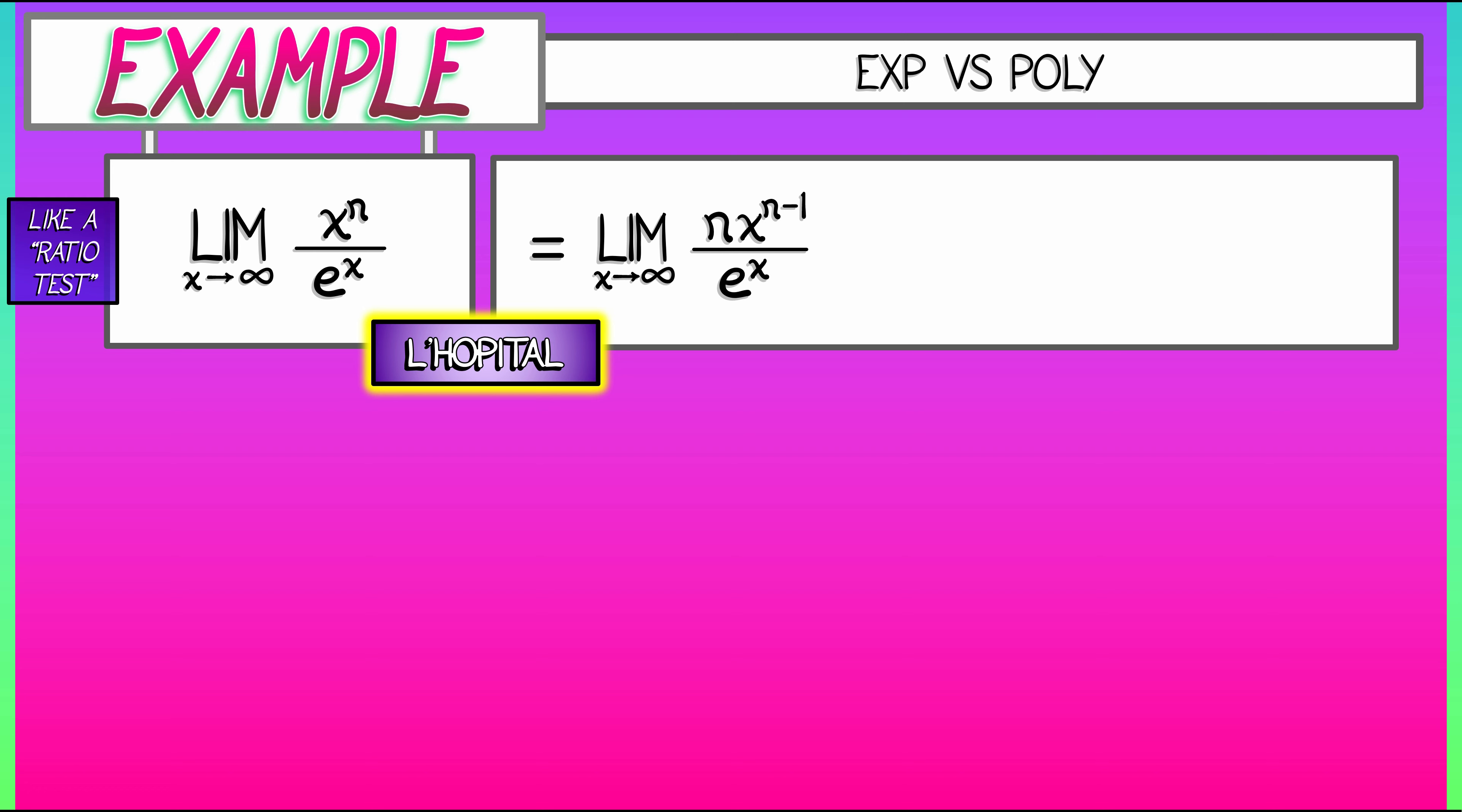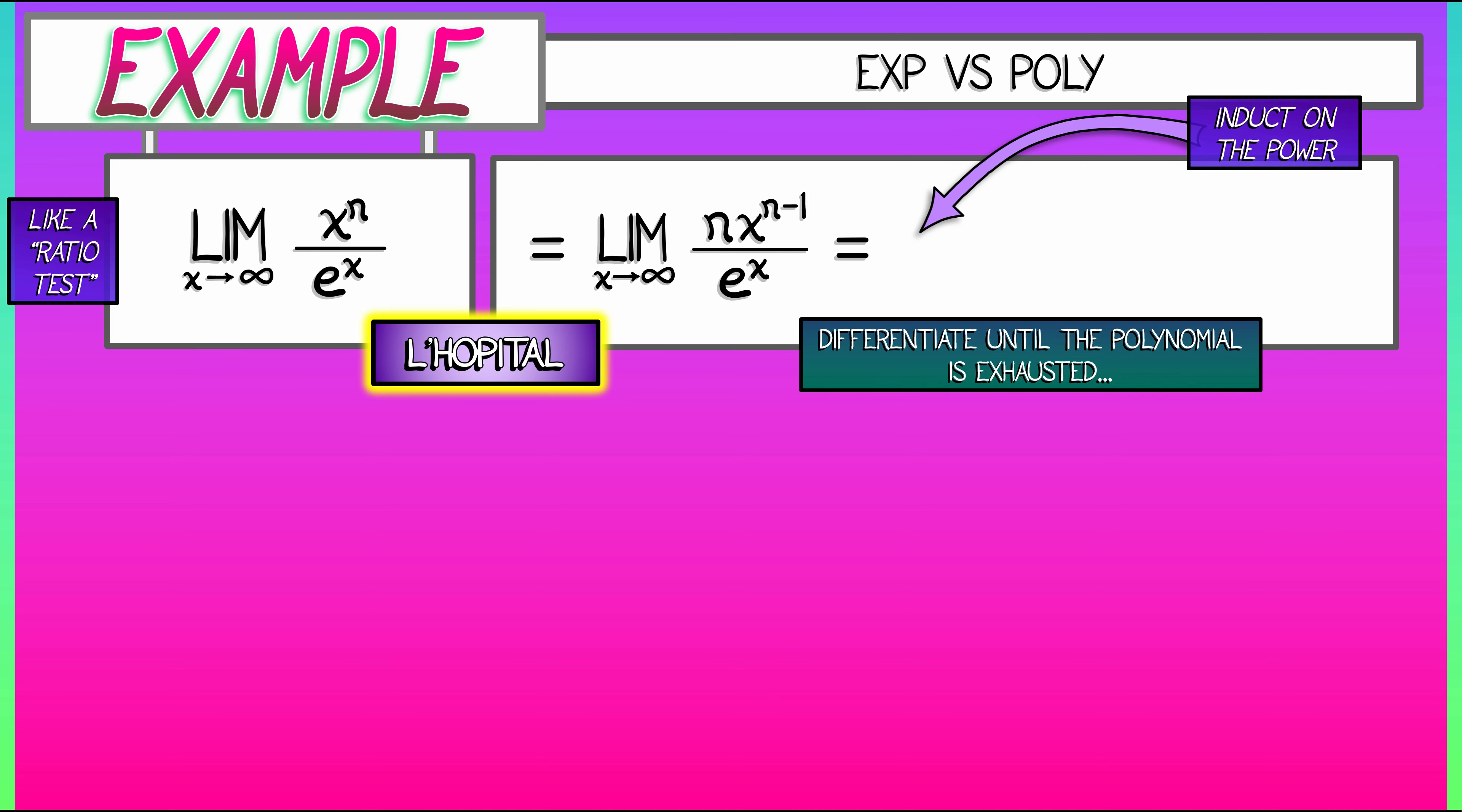So, what do we do? We know what to do with L'Hopital. We repeat and we keep differentiating until that polynomial in the numerator is exhausted. The denominator remains fixed. And so, after a certain number of inductive steps, we get the limit as x goes to infinity of n times n minus 1 times n minus 2. We're going to get n factorial times x to the 0 divided by e to the x. The numerator is a constant.